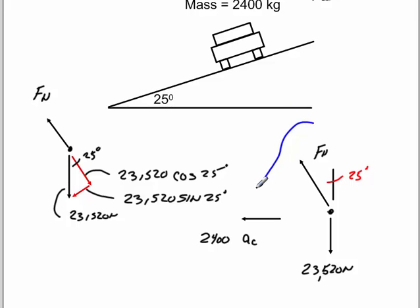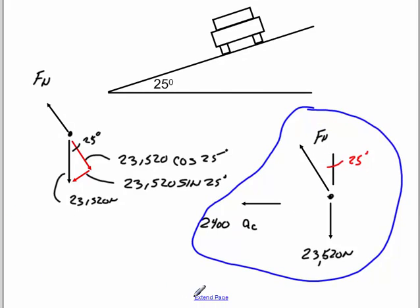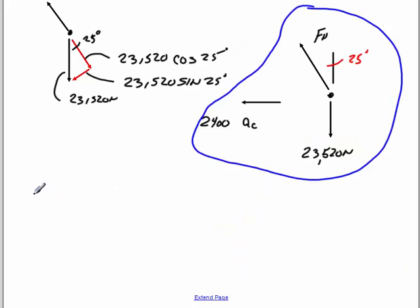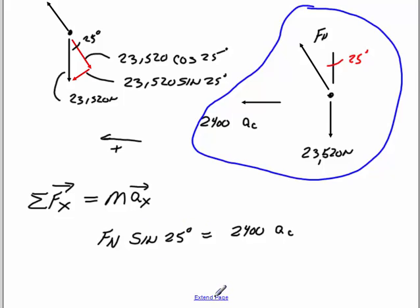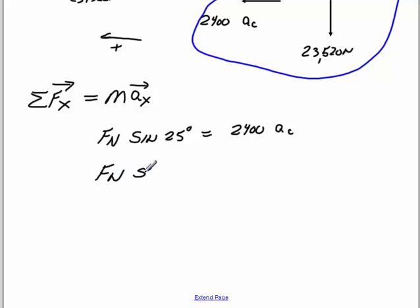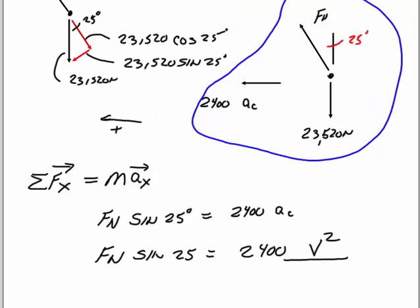So that's what the free body diagram would look like. We can say the summation of forces in the x direction must equal mass times acceleration in the x direction, where this acceleration is the centripetal acceleration. I'm going to let anything that goes to the left be positive. When I do that, I get force normal times the sine of 25 degrees, which gives the horizontal component of this normal, and that must equal the mass of the car, 2,400, times velocity squared divided by the radius of 180 meters.